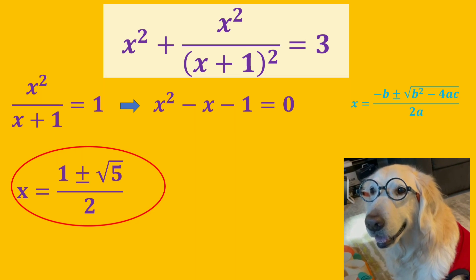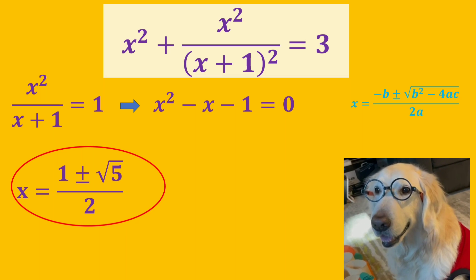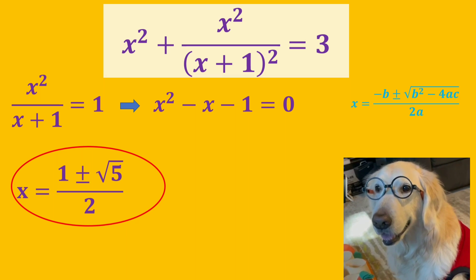We use the quadratic formula for the first equation and get two values of x here. x is equal to 1 plus or minus square root of 5 all over 2.